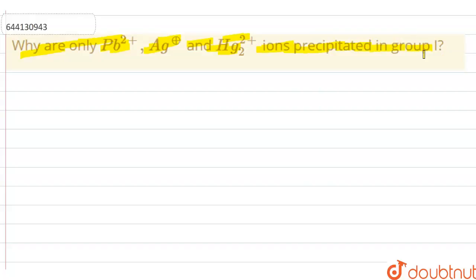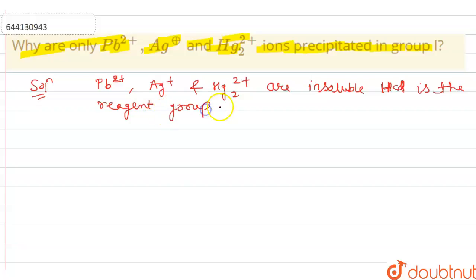Listen carefully. Out of all chlorides, those of Pb²⁺, Ag⁺, and Hg₂²⁺ are insoluble in HCl. HCl is the reagent of group 1.